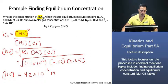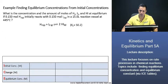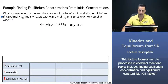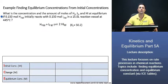Now let's continue with our next problem. What is the concentration and the amount of moles of hydrogen and hydrogen iodide at equilibrium if 0.15 moles of hydrogen initially reacts with 0.15 moles of iodine in a 15-liter reaction vessel at 445 degrees Celsius? This is going to be a problem that we'll use the ICE table to solve. Before beginning with the ICE table, you always want to make sure that your equation is balanced.